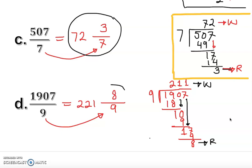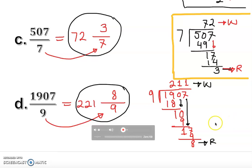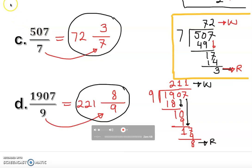To summarize: divide the numerator by the denominator, keep the quotient as the whole number of the mixed fraction, put any remainder as the numerator of the fractional part, and keep the same denominator. That's how you convert an improper fraction to a mixed fraction. Thank you for watching.